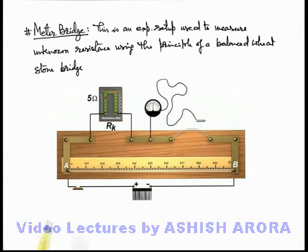In the other gap, there is an unknown resistance which we connect, which is to be measured. From the middle point of the metal strip, a galvanometer is connected, and the other end of galvanometer is connected to a jockey, which is in contact with meter bridge wire AB. On the two terminals of A and B, you can see there is a battery connected along with a key.